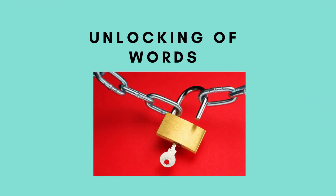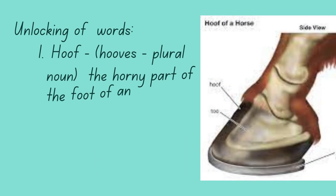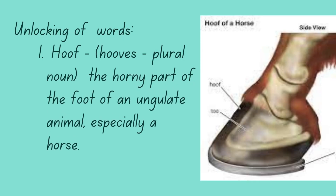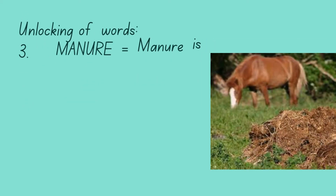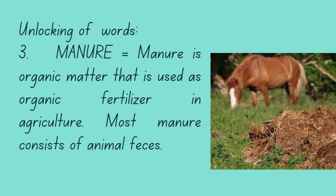Before we proceed to our topic, let's define some words that you may find difficult to understand. Hoof or hooves (plural noun): the horny part of the foot of an ungulate animal, especially a horse. Hide or skin: an animal skin treated for human use. Manure: organic matter used as organic fertilizer in agriculture; most manure consists of animal feces.